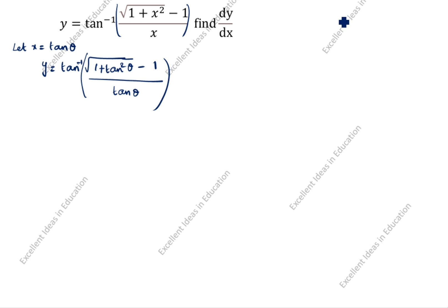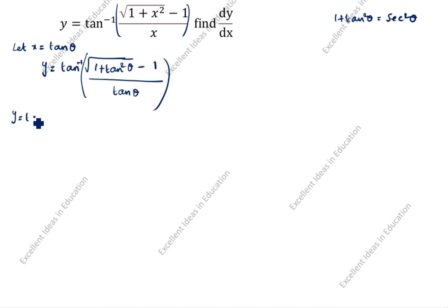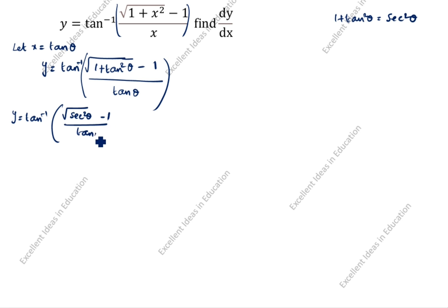The formula we use here is: 1 plus tan squared theta is equal to secant squared theta. So we apply this formula — y is equal to tan inverse of root of secant squared theta minus 1, divided by tan theta.